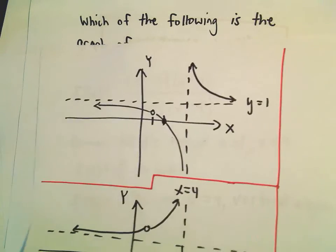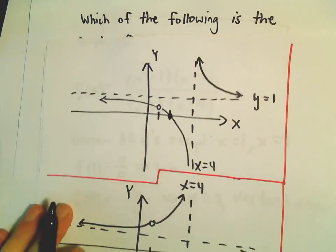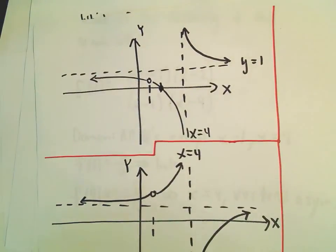All right, so both of our graphs did have a vertical asymptote here at x equals 4. Okay, so far, so good. Notice they also both have little holes here at x equals 1.